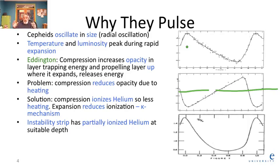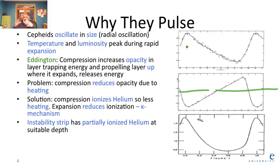The idea is: if compression increases opacity in some layer of the star — makes it more opaque — then when the star is compressed, that layer will trap energy and be pushed out by radiation pressure until the star expands. The layer then releases its energy, and the star will contract again because the layer becomes transparent and energy can escape. So you have this mechanism for trapping energy.